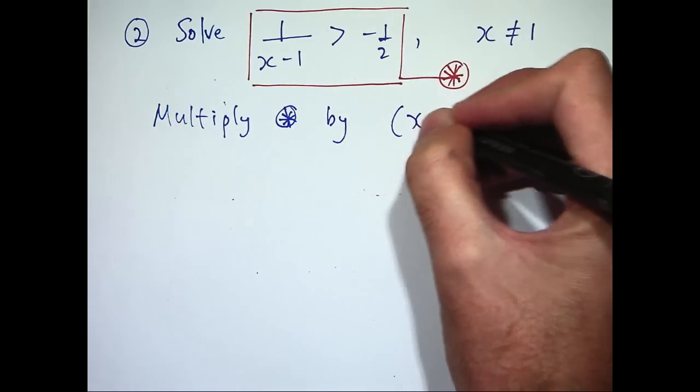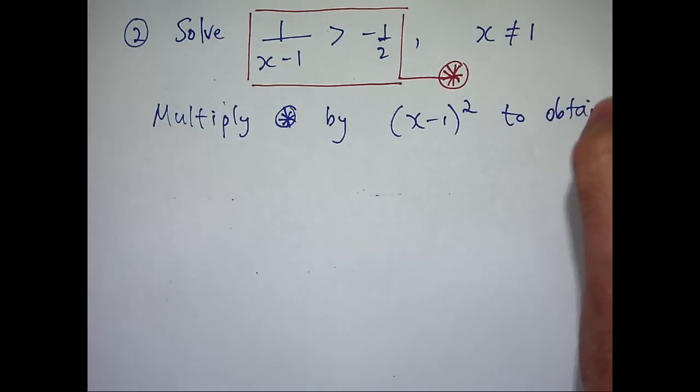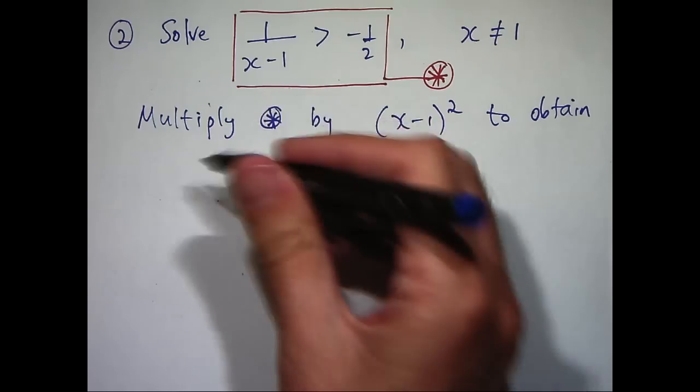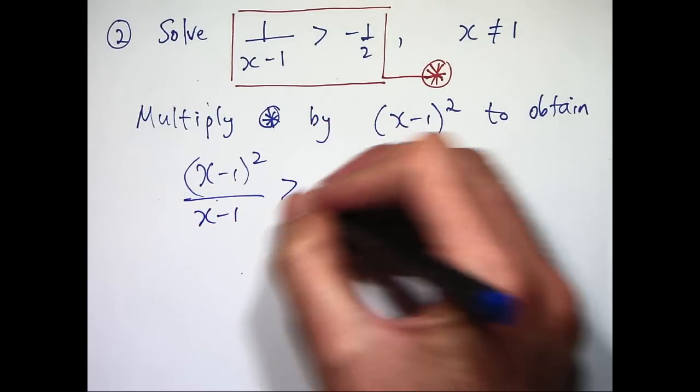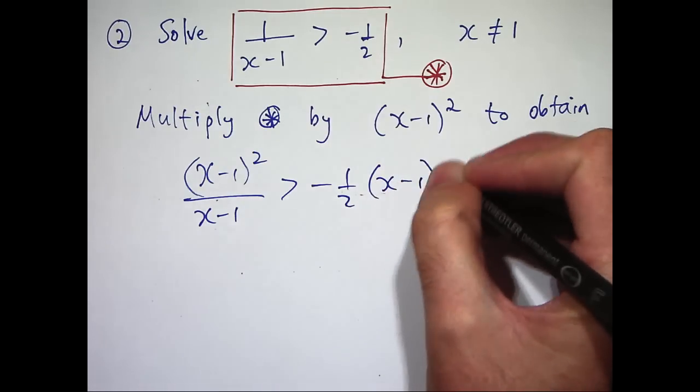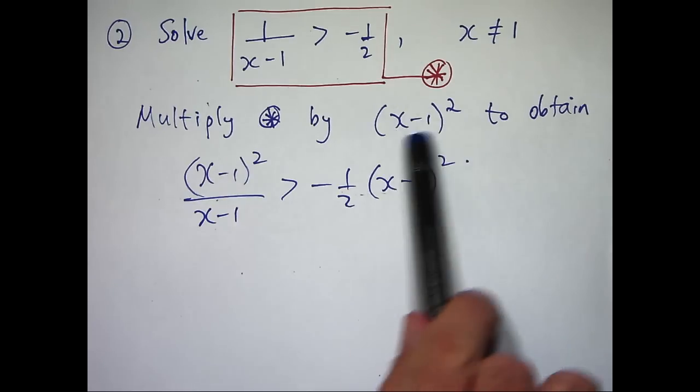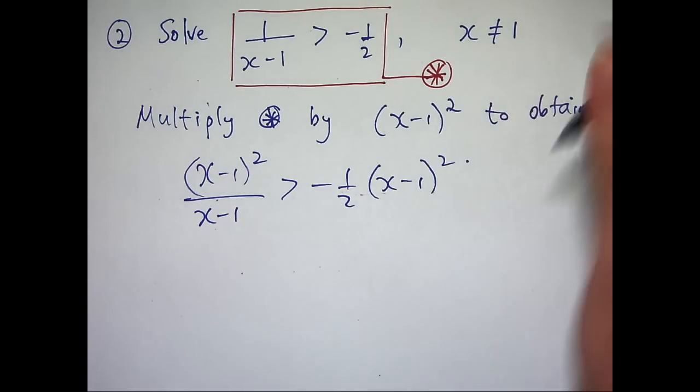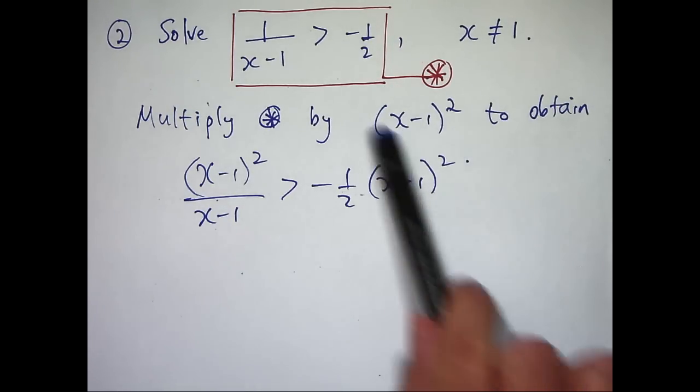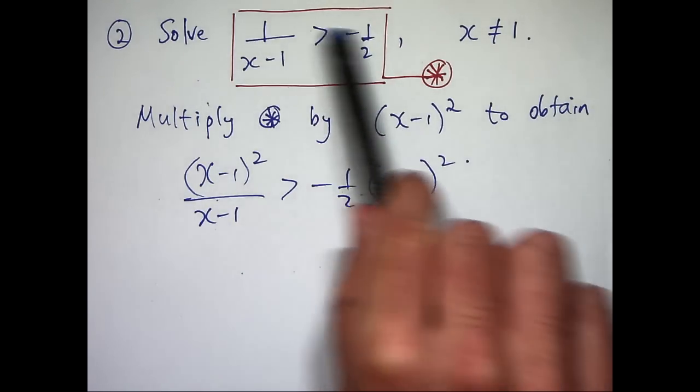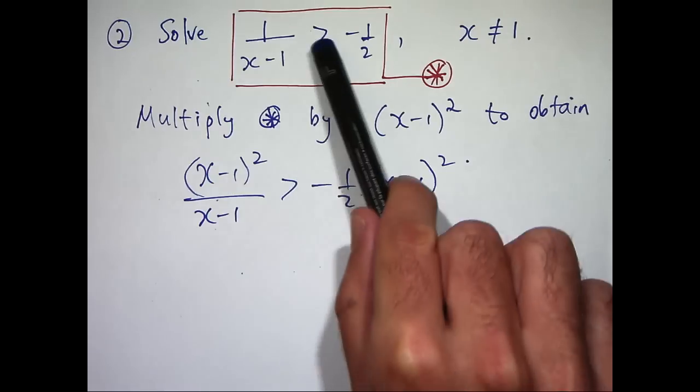So x minus 1 all squared to obtain, we're going to get x minus 1 all squared at the top and x minus 1 all squared here. Now, why did I multiply by x minus 1 all squared? Why not just x minus 1? Well, because x is not equal to 1, this must be positive. So if I multiply any inequality, both sides, by a positive number, I can keep the same inequality sign.